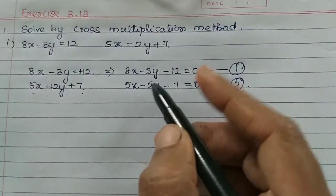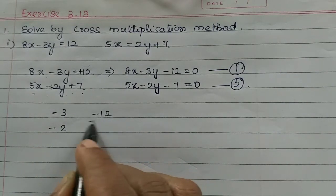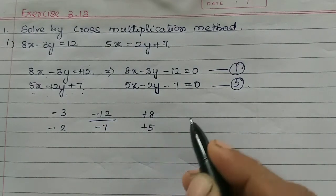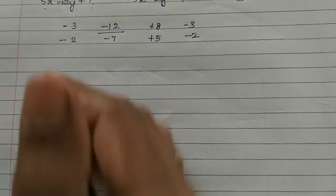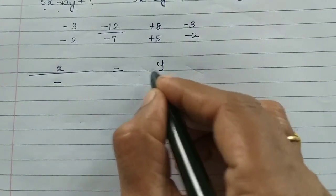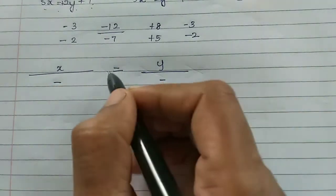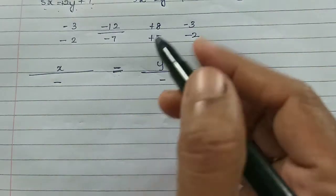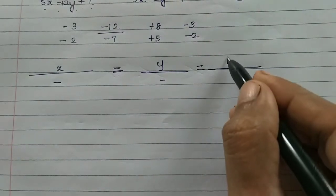So what do we do? The y-coefficient is minus 3 and minus 2. The constants are minus 12 and minus 7. Next, the x-coefficients are plus 8 and plus 5, and the last y-coefficients. We arrange this as x by minus, equal to y by minus, equal to 1 by minus — be careful with the signs.